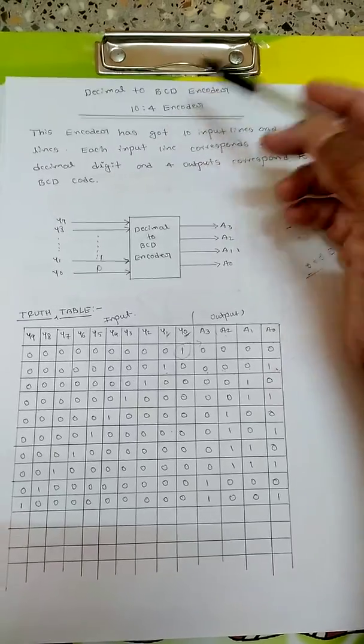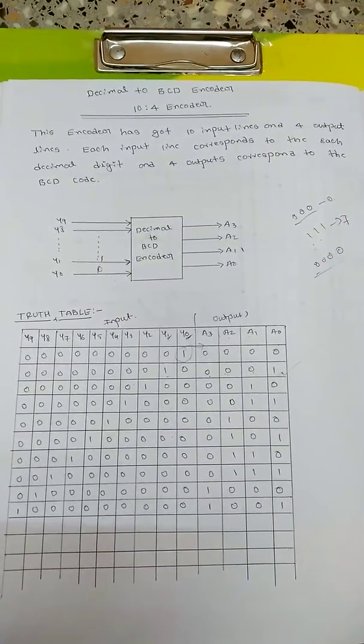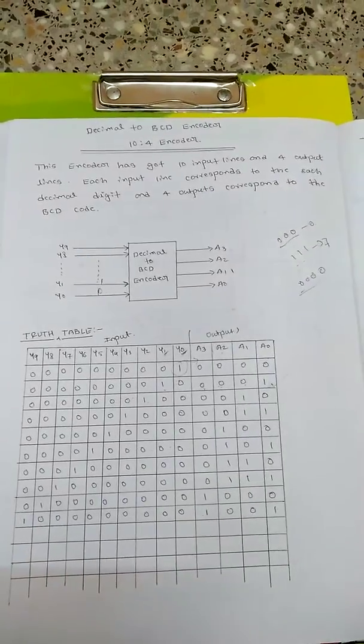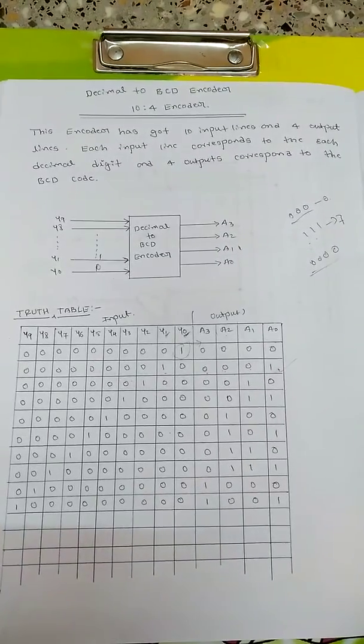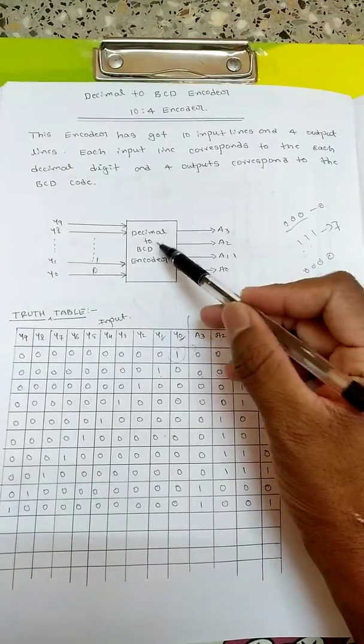This encoder has 10 input lines and 4 output lines. Each input line corresponds to each decimal digit and 4 outputs correspond to the BCD code. So this is a decimal to BCD converter or encoder with 10 inputs on the left hand side and 4 outputs on the right hand side.